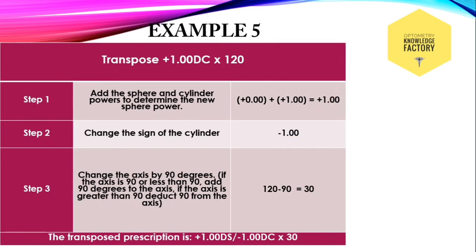Example 5: transpose plus 1 diopter cylinder at 120. Here the spherical component is 0. This is a plano convex cylinder. So we consider the spherical component as 0. Add 0 with plus 1 diopter, that is 1 diopter. This is the spherical component of the transposed form.